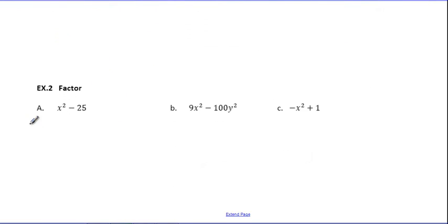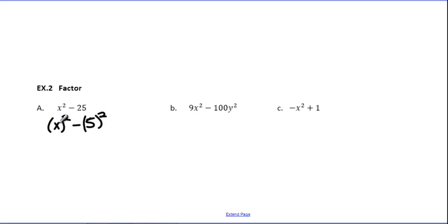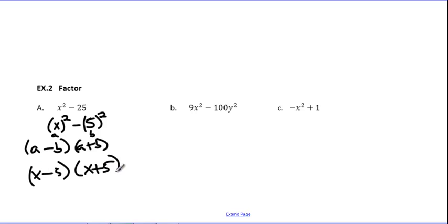Now let's deal with some factoring. Notice that these are all binomials, so we're thinking Difference of Squares. The square root of x² is x. I'm going to rewrite this: x being squared, and the square root of 25 is 5, so this is really x getting squared and 5 getting squared. I have subtraction in the middle. So I put it into my pattern — (A minus B)(A plus B) — where A is x and B is 5. This gives (x minus 5)(x plus 5). That's the pattern we're going to use.